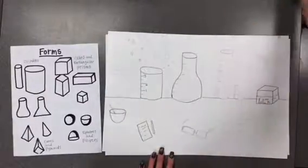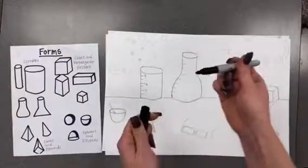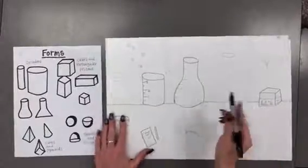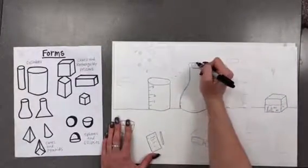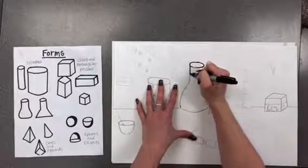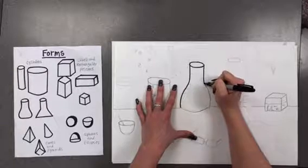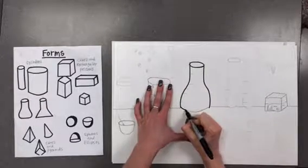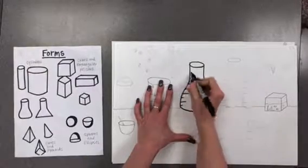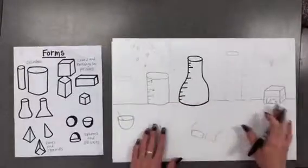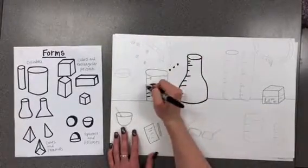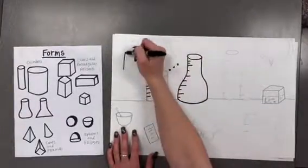Then we're going to practice something called outlining. You are going to take your black sharpie marker and you are going to go over every single line that you made. For example, this cylinder, I'm going to go very carefully and very slow around every single line I made. I'm not going to forget about these little tiny bubbles, I'm not going to forget about the little lines on the beakers, I'm not going to forget about the lamp in the background.